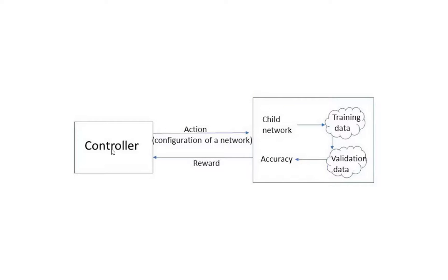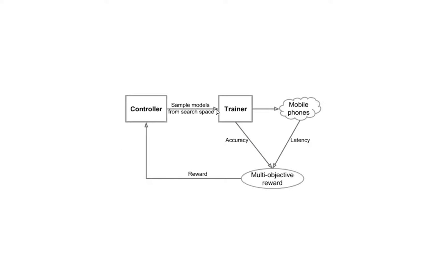The controller proposes a configuration of a network. These child networks train on a CIFAR-10 subset of the dataset, and then we check accuracy on validation data. Whatever accuracy comes, we pass it as a reward to the controller. If the accuracy is highest, the reward is highest, and the controller changes its policy to give a better network configuration next time. We can also optimize for latency, so the reward function becomes a combination of both accuracy and latency.